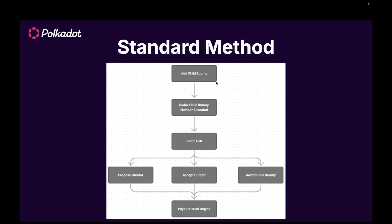This is the standard method people use when operating bounties. First, you add a child bounty, which gives you a global child bounty number. If you did all of the actions in a single batch call — so you issued an extrinsic that does everything together — it has a chance of failing. That's because there's not only your bounty in the system; there are other bounties. So if your multisig takes a long time to sign off, another bounty could issue an add child bounty call and get the global number you were referring to. You should do add child bounty as a single call, wait for it to be signed off, and then get the allocated global child bounty number.